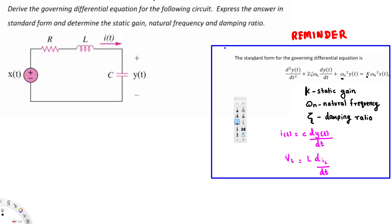If you look at the standard form of a governing differential equation, the static gain is the K value, the natural frequency is the ω_n value, and the damping ratio is the ζ value. These are the three things we are going to find after we derive the differential equation.